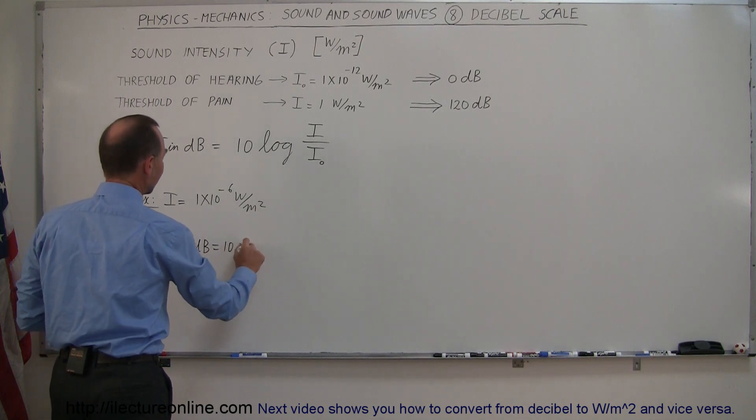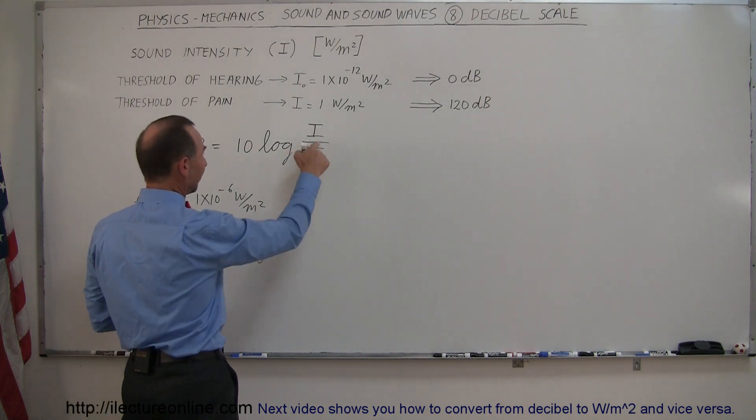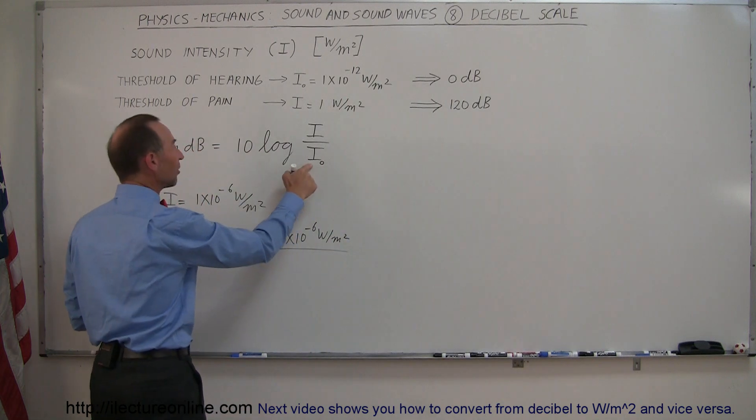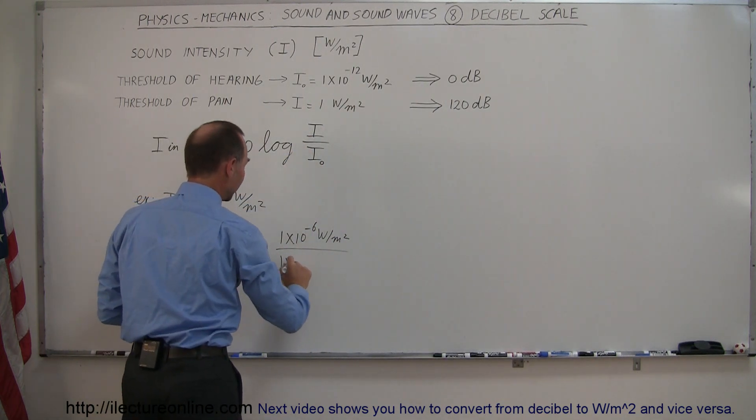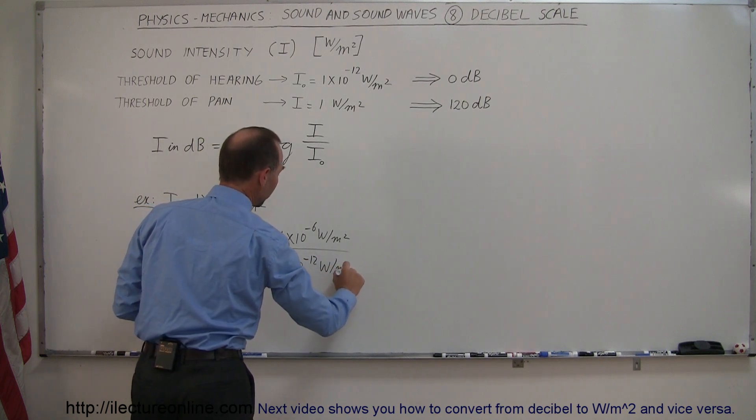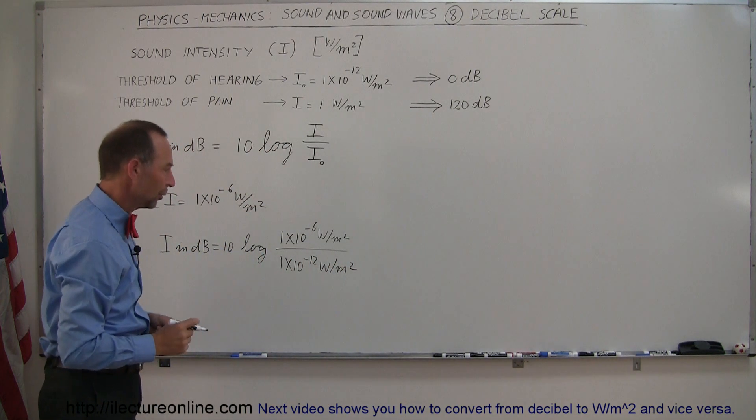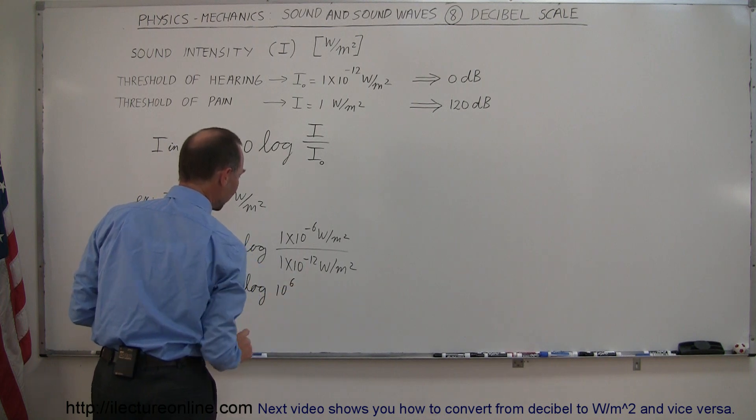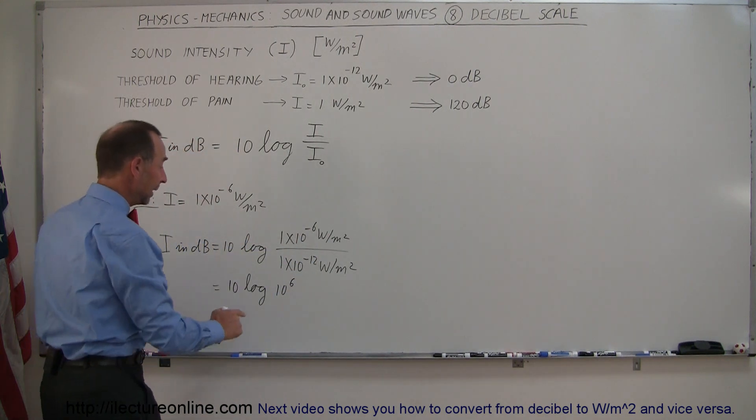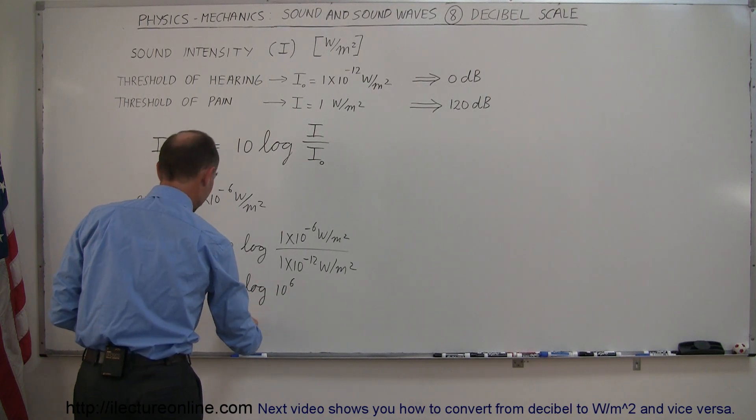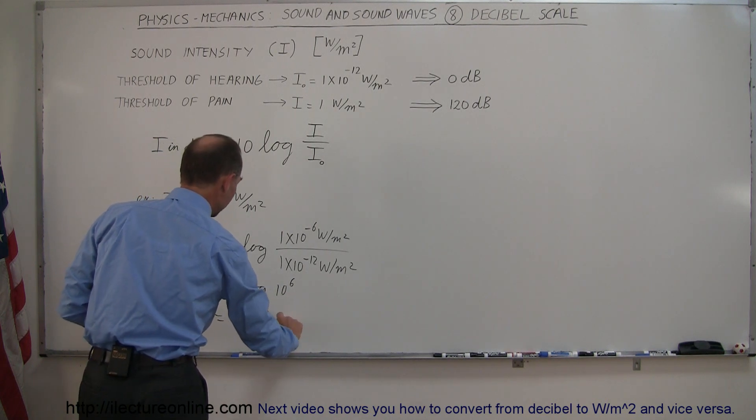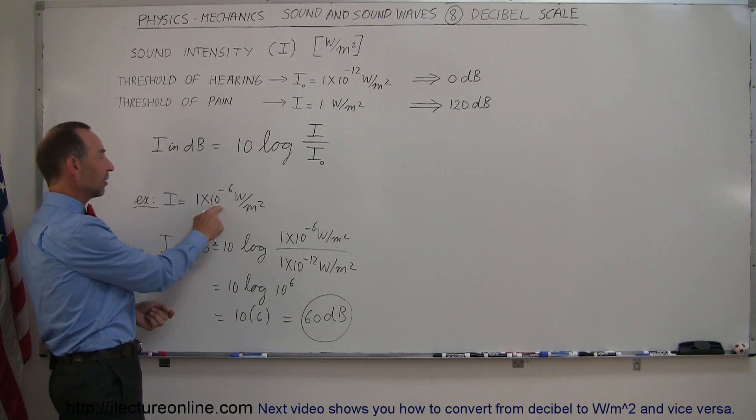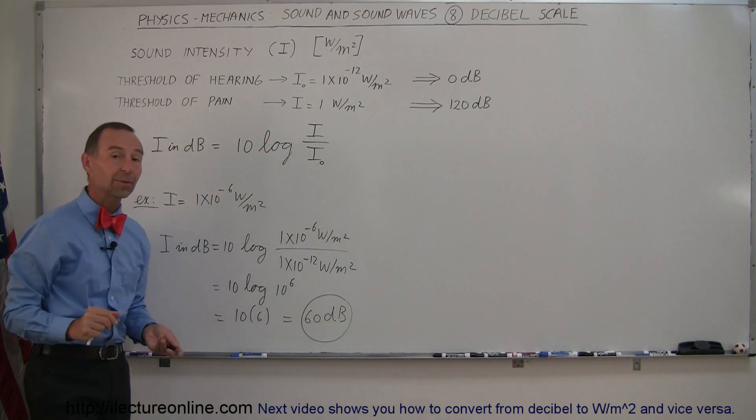All right, so I in decibels is equal to 10 times the log of the intensity, which is 1 times 10 to the minus 6 watts per square meter, and we divide that by the faintest sound that the human ear can hear, which is 1 times 10 to the minus 12 watts per square meter. Now when we divide that, you notice that's equal to 10 to the sixth. So this is equal to 10 times the log of 10 to the sixth. The watts per square meter cancels out, and the log of 10 to the sixth equals 6. So this is 10 times 6, which equals 60 decibels.